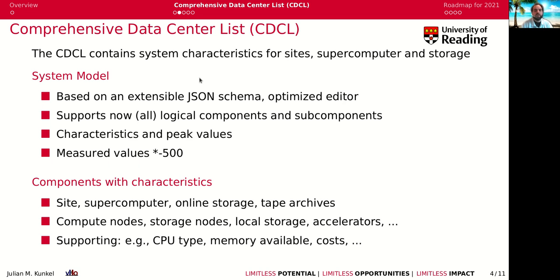CDCL contains system characteristics for sites, supercomputers, and storage. The system model is based on an extensible JSON schema with an editor, and you can basically record all the components and subcomponents at your site, their characteristics, peak values, and any kind of benchmark or benchmark-list values.